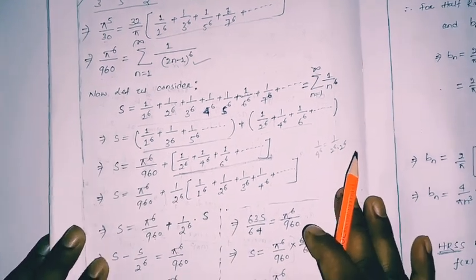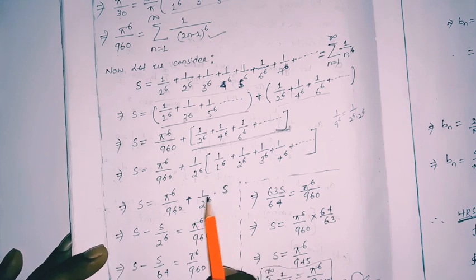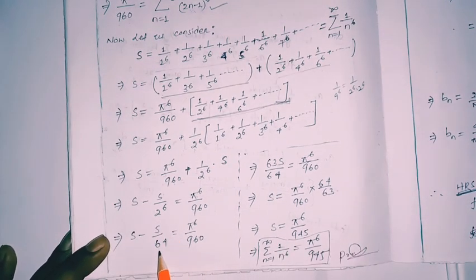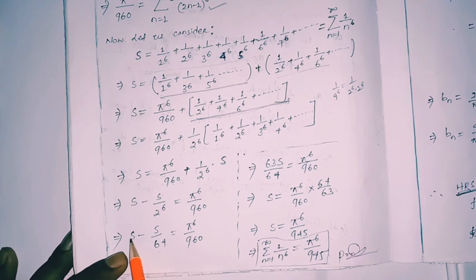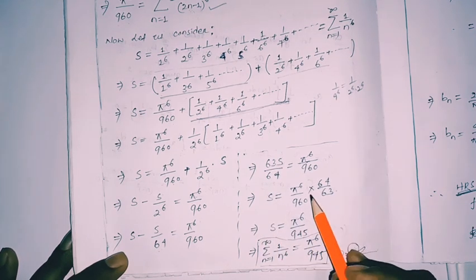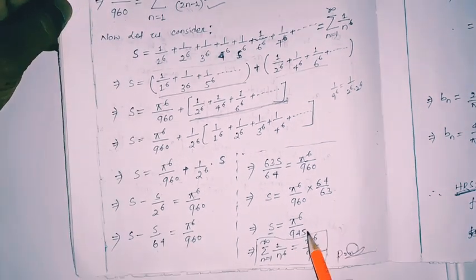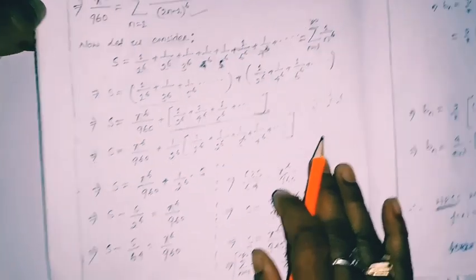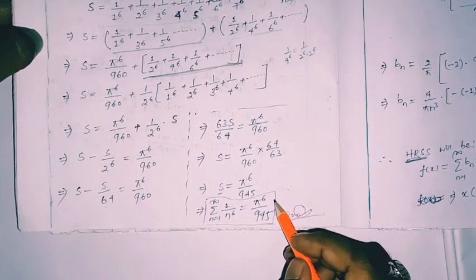Rearranging: S − S/64 = π⁶/960, so 63S/64 = π⁶/960. Therefore S = (π⁶/960)·(64/63) = π⁶·64/(960·63) = π⁶/945. Hence Σ_{n=1}^∞ 1/n⁶ = π⁶/945, which is what we intended to prove.